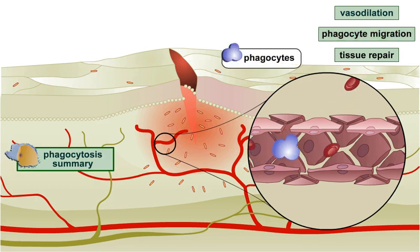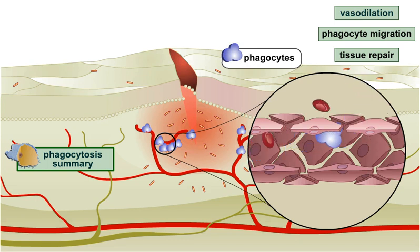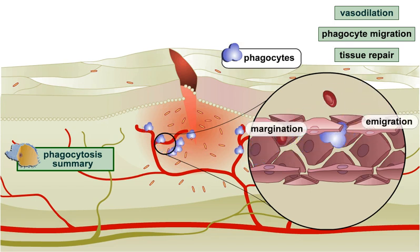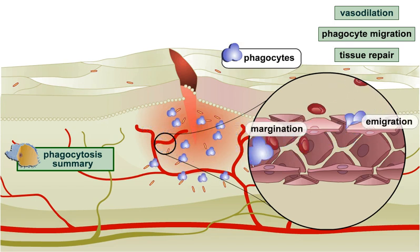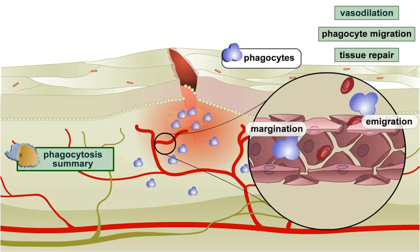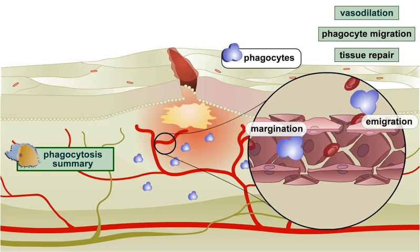The increased blood flow delivers phagocytes, such as monocytes and neutrophils, to the scene. The phagocytes stick to the walls of the blood vessels in a process called margination, then squeeze through the gaps between the cells in a process called emigration, or diapedesis. Within about an hour of tissue damage, the phagocytes begin to destroy the invading microorganisms by phagocytosis.